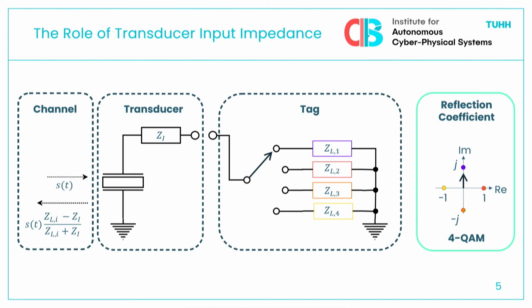So how do we actually do that? What the tag can really control is only the reflection coefficient on its transducer. The reflection coefficient is a function of the tag transducer's input impedance — denoted as Z_t here — and of the load impedance that we apply to the tag, and this is a highly non-linear function. Ideally we can select four different load impedances at the tag's transducer so that we produce different reflection coefficients. As soon as we switch to a different load we get a different reflection coefficient. The question is how do we choose those load impedances to get a nice constellation diagram, like shown on the right, for a 4-QAM modulation scheme? If we know the input impedance of the transducer then it's straightforward — we have the formula, we calculate what load we need for a given reflection coefficient.